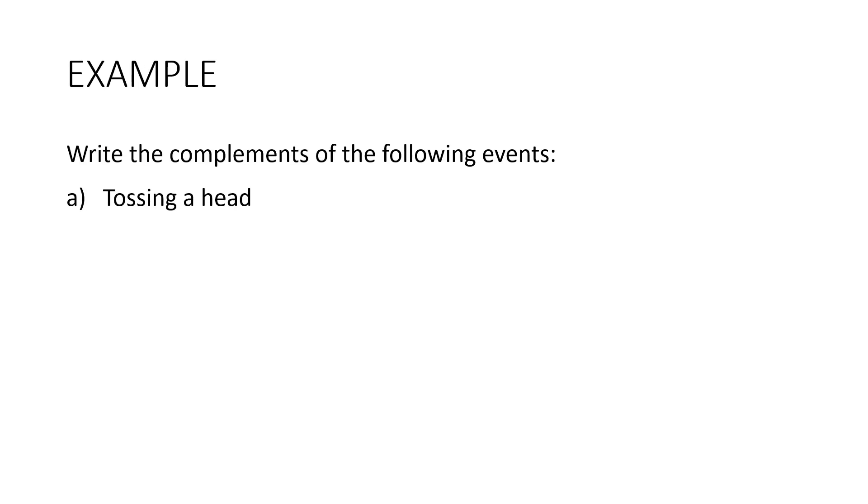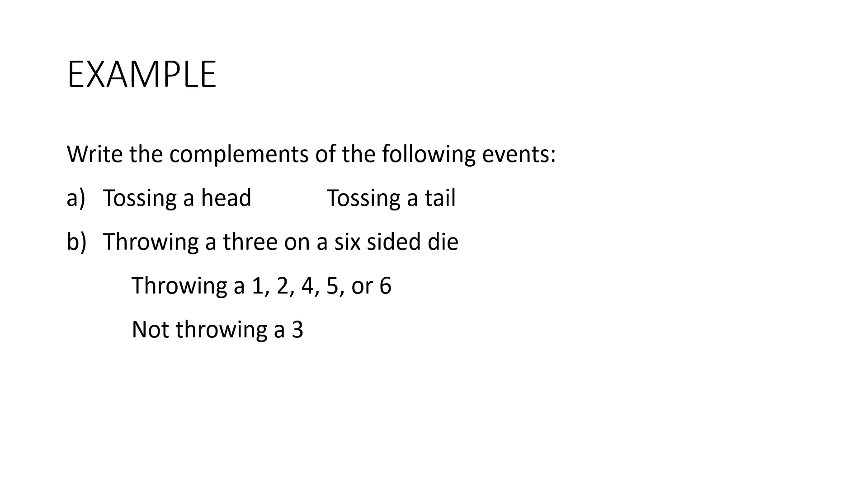Let's see if we can do these. We want to write the complements of the following events. So if our event is tossing a head from a coin then the complementary event would be tossing a tail. How about this one? Throwing a 3 on a 6 sided die. So we could say throwing a 1, 2, 4, 5 or 6 but there's an easier way isn't there. We could write not throwing a 3.